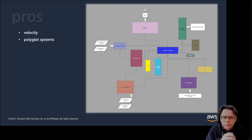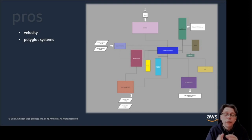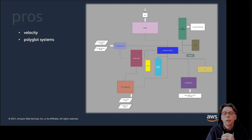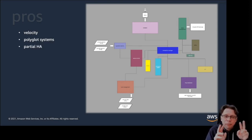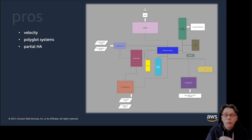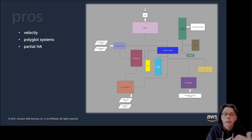That makes the whole thing faster. You end up with a polyglot system in the sense that you potentially have different programming languages and data stores that you can optimize for the task at hand — for example, writing the renderer in Node.js and the payment microservice in Java. Last but not least, you also have partial high availability: parts of the system may go down, yet to the end user some functionality is still available. In an e-commerce setup, you might not be able to search, but you can still check out items in your shopping basket.